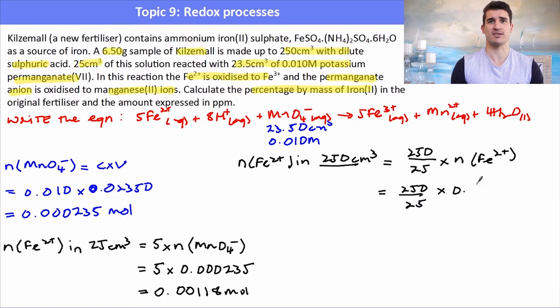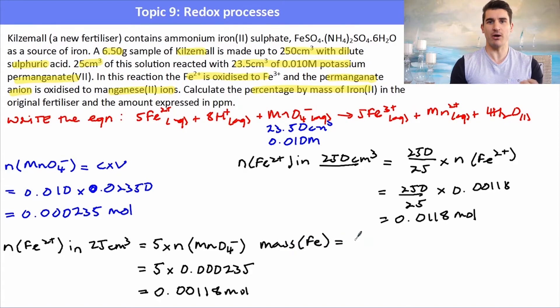So I worked that out to be 0.0118 moles, which is in the 250 ml volumetric flask. Now that is the number of moles that was in the sample because all of the sample went into the volumetric flask. So now I can find the mass of iron that was in the sample by multiplying by the molar mass of iron, which gives me my mass of iron in this fertilizer sample, which in this case is 0.656 grams.